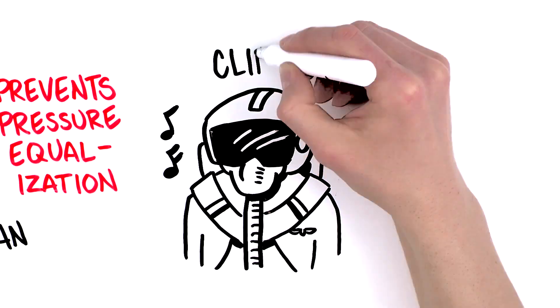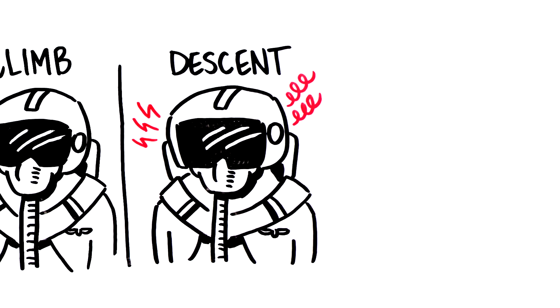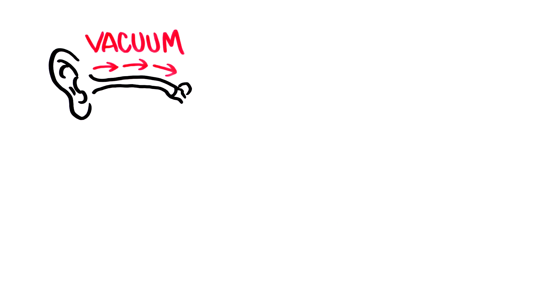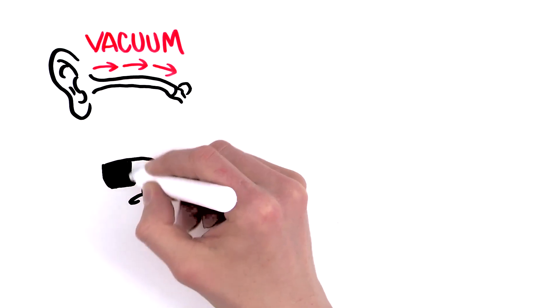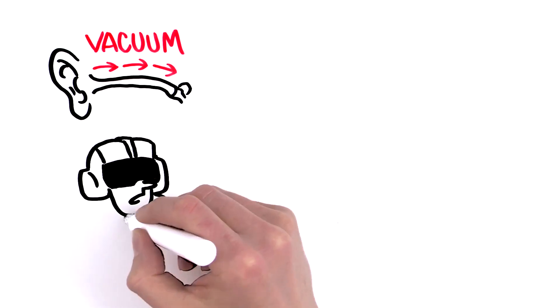You might not notice anything during the climb, but the descent can become a serious problem for you. During descent, a vacuum builds up in your middle ear, and your eardrum is pushed more and more inwards. You won't be able to compensate for the changes in pressure very well.